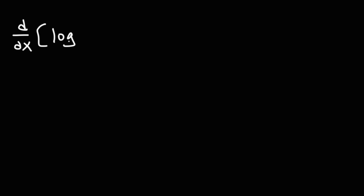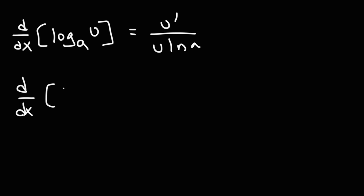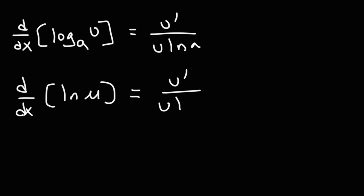Now let's talk about the derivative of logarithmic functions. If we want to find the derivative of log base a of u, where u is a function of x, it's going to be u prime over u ln a. If we want to find the derivative of the natural log of u, keep in mind the base of a natural log is e. It's going to be u prime over u — since ln e equals 1, you can just write u on the bottom. Those are the two formulas you need when finding the derivatives of logarithmic functions.